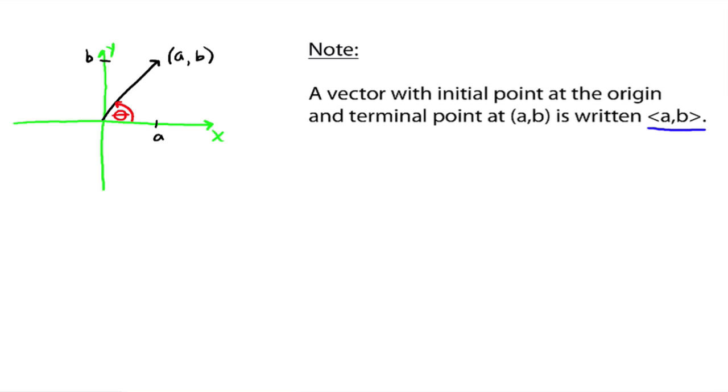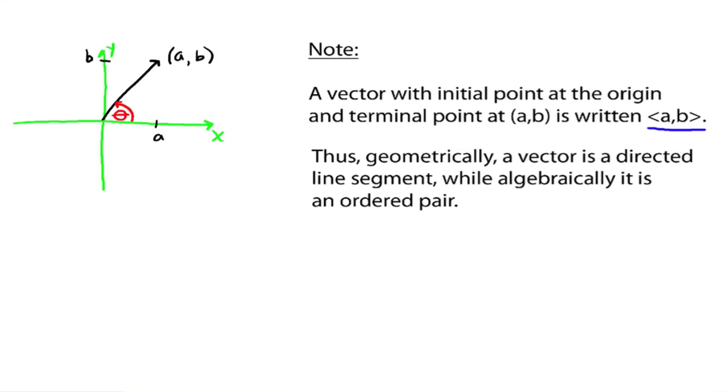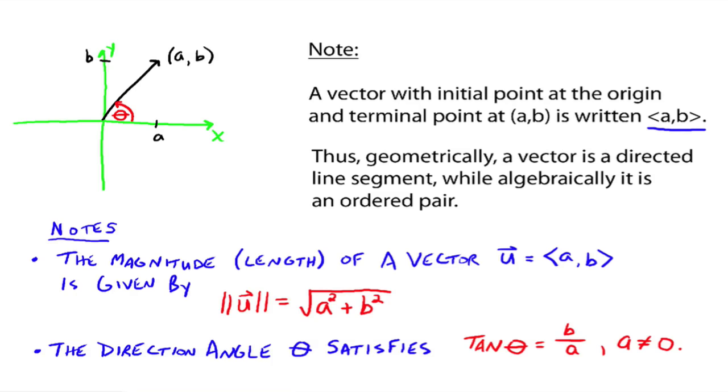Now what does that really mean? Well, that means that geometrically, a vector is a directed line segment, but algebraically, it is an ordered pair. That's really what it's saying. And that's actually going to make things nice for us when we start adding, subtracting, and whatnot. Algebraically, it's just pretty easy to do algebraically. So, a couple more notes.